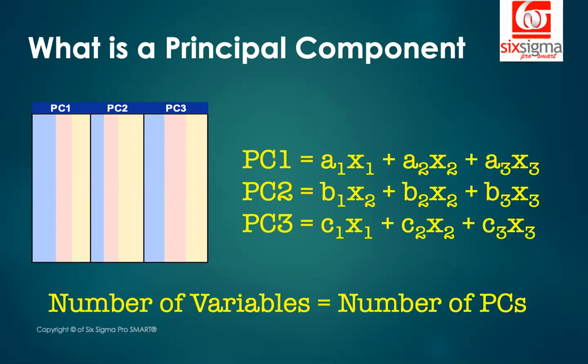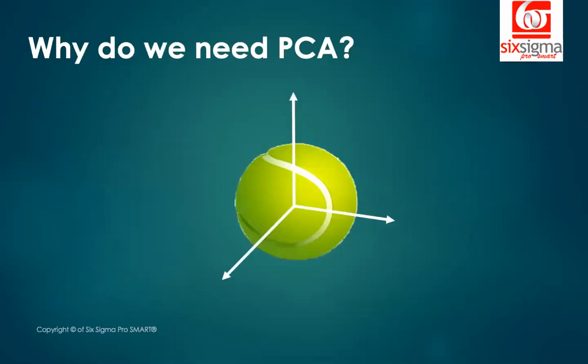An important rule is that the number of principal components you can extract will always be the same as the number of variables. But then the question arises: if we're going to work with the same number of principal components, where is the dimension reduction happening? We actually do dimension reduction, but that's done after we extract the principal components.